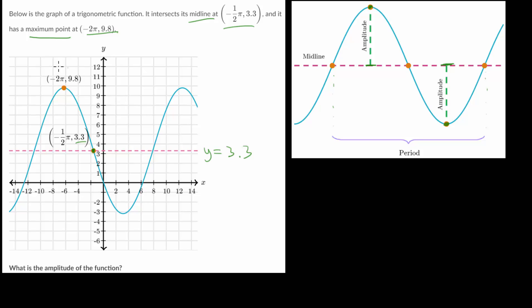Since we know the y value of our maximum point, and we know that the amplitude is just the distance from that maximum point to the midline, we can figure out this amplitude. It's just the difference between the y value at the maximum and the y value at the midline.